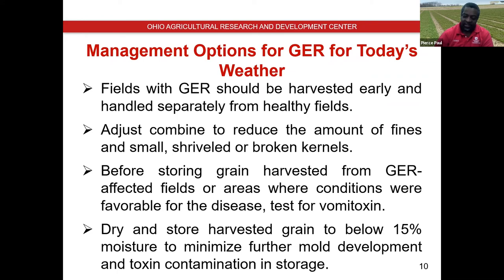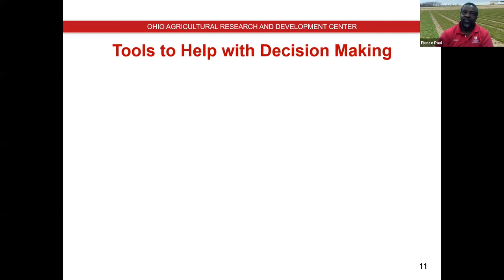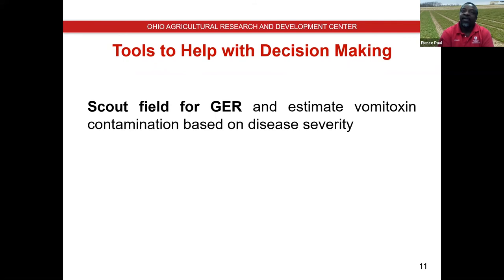What we wanted to do is use weather-based information to develop tools that can help with making some of these decisions. The first step is to scout fields. If you quantify Gibberella ear rot in the field, you can use that information to estimate the level of vomitoxin contamination in the grain. We found that we can use Gibberella ear rot severity to predict the risk of grain contamination with more than one part per million vomitoxin with an accuracy of 87%. The challenge is that you have to peel back husks and look at individual ears.